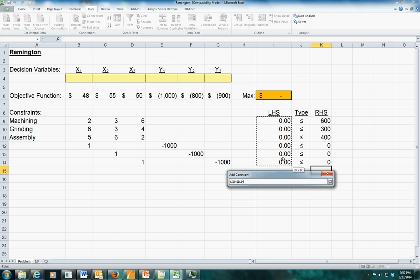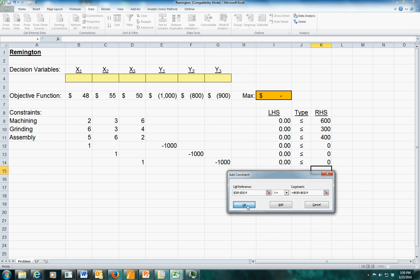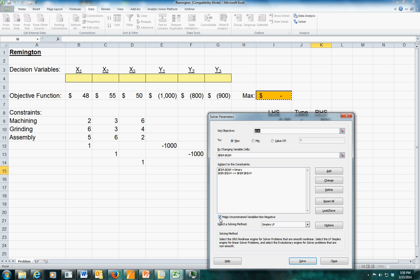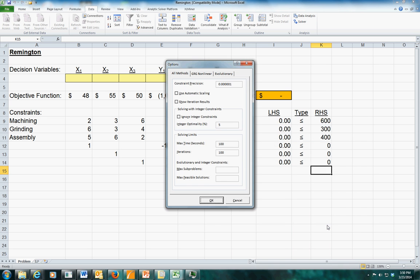Non-negativity applies. Simplex LP applies. Now, for integer and binary problems, always look in the options box. This ignore integer constraints box must not be checked. Sometimes it is by default. Here it's not, so we're okay.